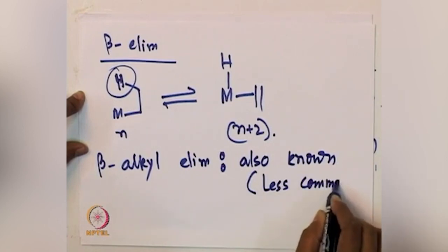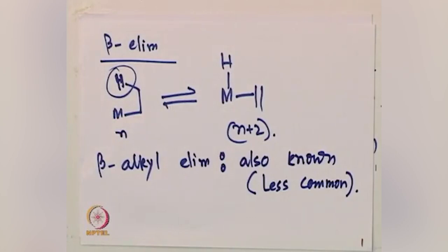Now, let us discuss what would be the preferred geometry — in what scenario beta hydride elimination will be favored. Beta hydride elimination is so common that it can be a nuisance, creating trouble for other desired reactions. If you have a beta alkyl intermediate and beta hydride elimination becomes too facile, the other reaction you may be expecting with the alkyl may not occur easily.